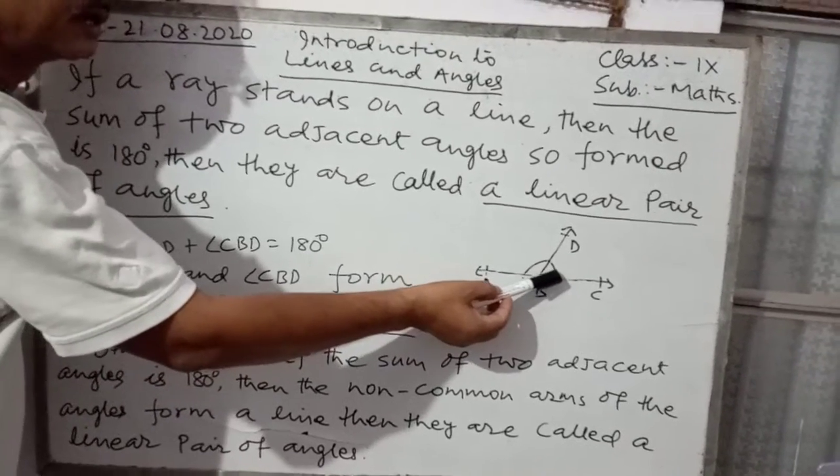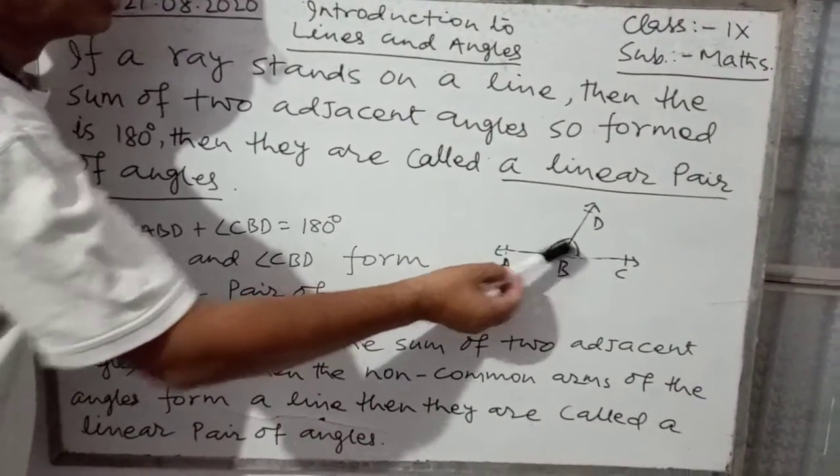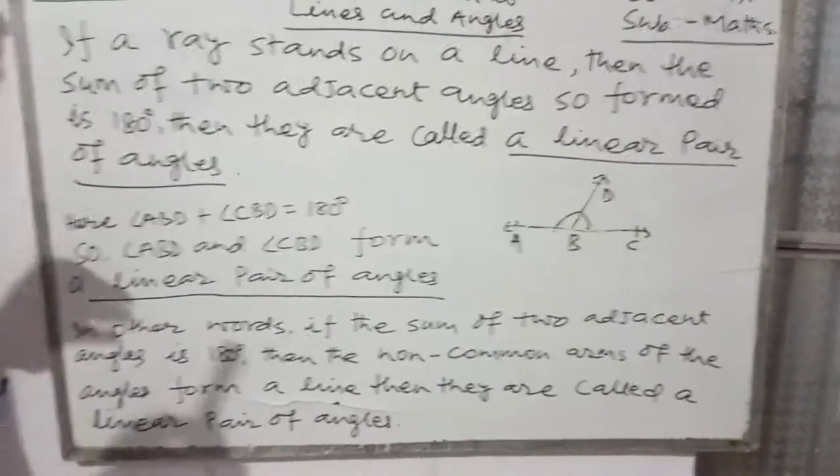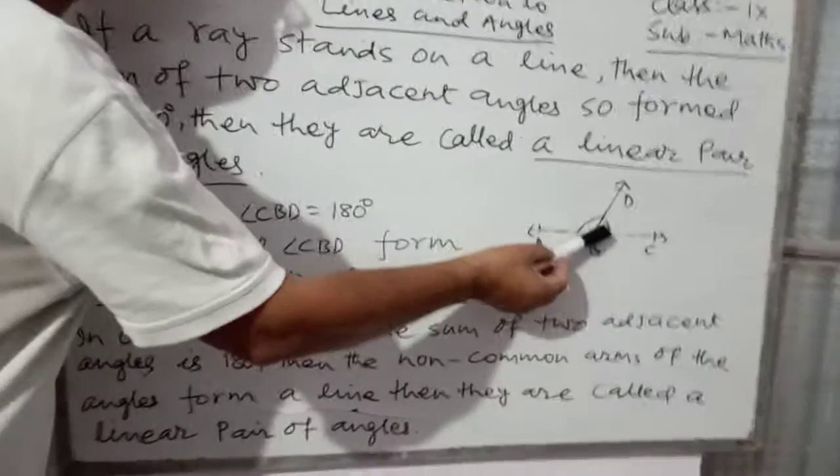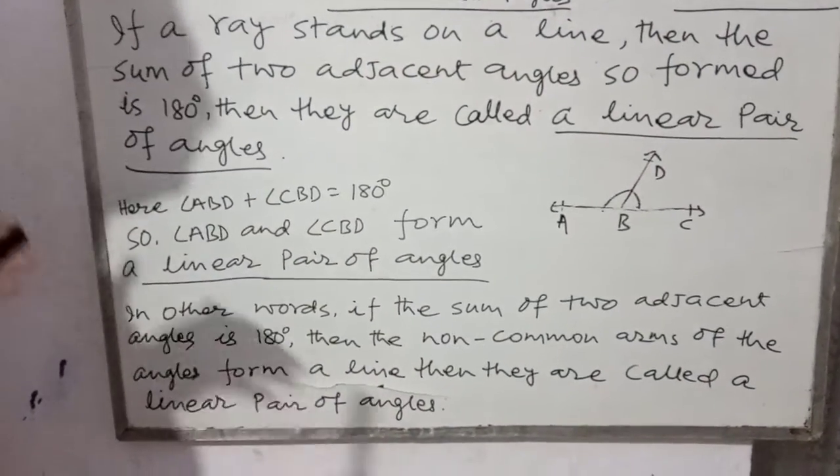Angle ABD or angle CBD, aur in dono adjacent angle ka sum 180 degree hai, to is two adjacent angle ko kya kahenge, linear pair of angles.